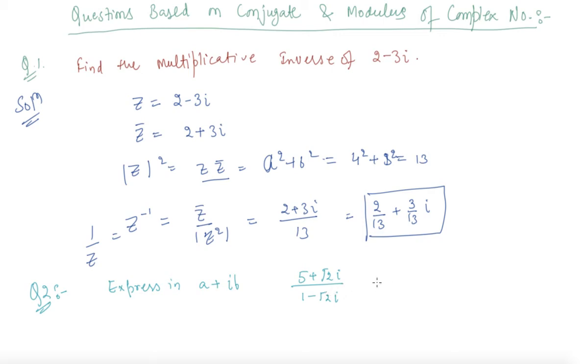What we want to do is first rationalize this complex number. Multiply the numerator and denominator by the conjugate 1 plus root 2 i. After multiplying, you will get 5 plus 5 root 2 i plus root 2 i minus 2 upon 1 minus root 2 i squared.